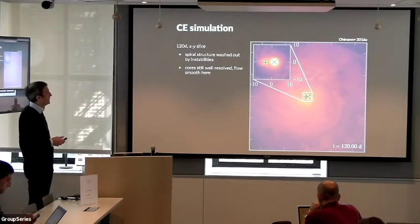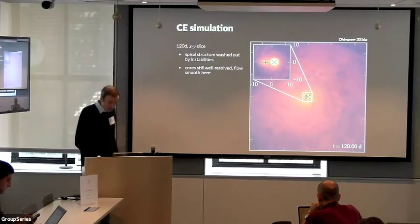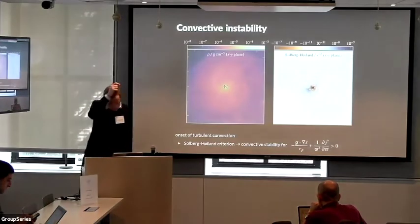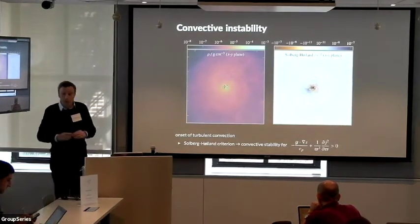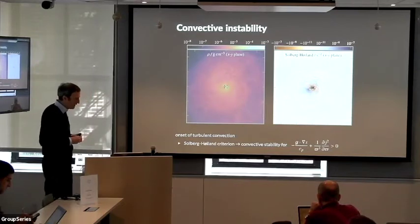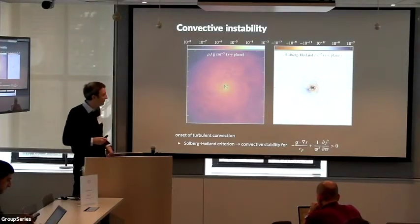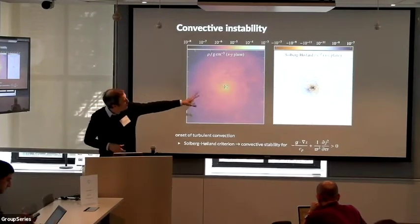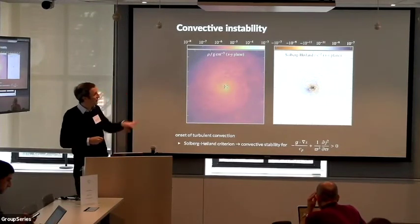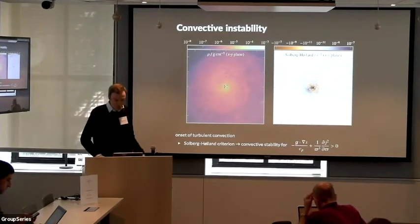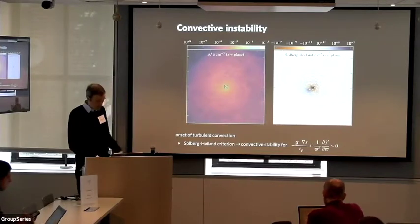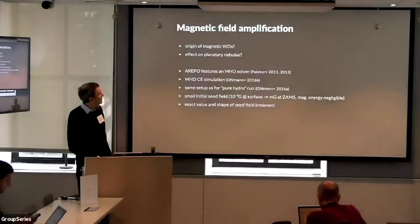Now, we take this as the onset of convective instability. This is analyzed according to the Schwarzschild criterion. The orange patches here are unstable to that criterion. You see that they are found all over the place, and this actually indicates convective instability.